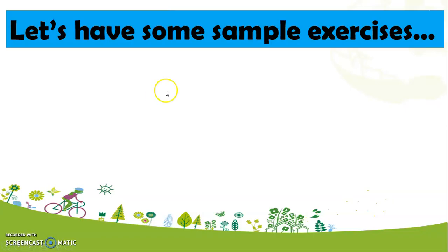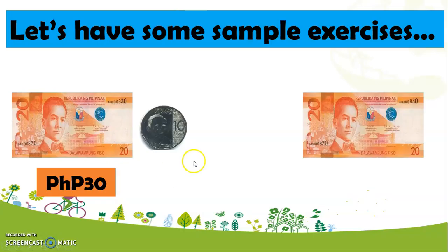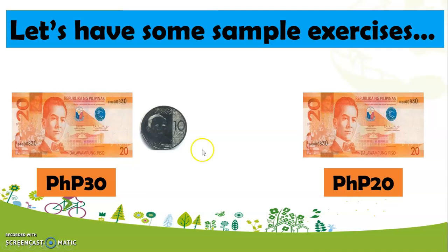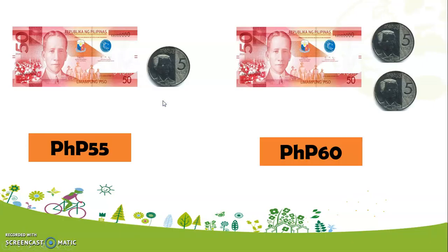Let's have some sample exercises. We have here 30 pesos and 20 pesos. We know that 30 pesos is bigger than 20 pesos, so we use the symbol more than. Now, we have here 55 pesos and 60 pesos. We know that 55 pesos is smaller than 60 pesos, so we use the symbol less than.